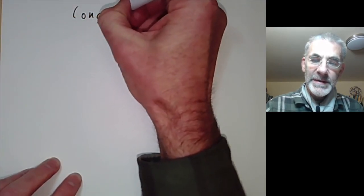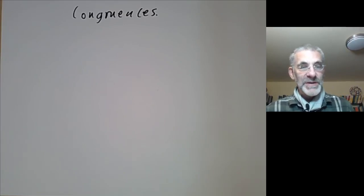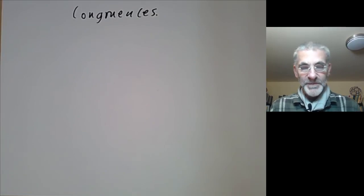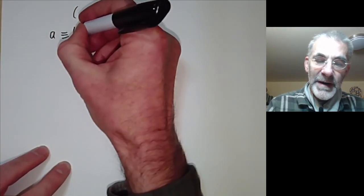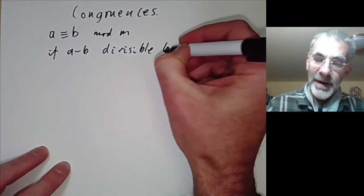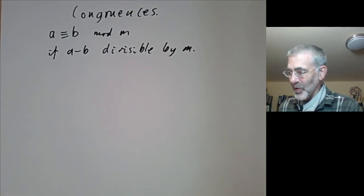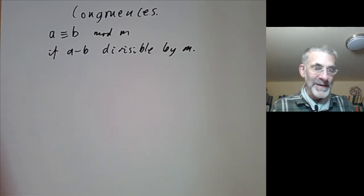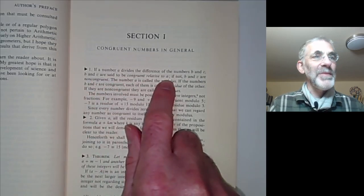This lecture is part of an online course on the theory of numbers and will be about congruences. So far we've had a few introductory lectures on primes and we're now going to move on to another chapter on congruences. We say a is congruent to b modulo m if a minus b is divisible by m. To illustrate that this notation is really important, Gauss's book Disquisitiones Arithmeticae has as the very first sentence of section one his definition of two numbers being congruent.